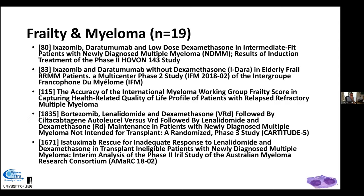There were 19 frailty abstracts at ASH 2021, largely focused on treatment. Highlighted studies include HOVON 143 (ixazomib, daratumumab, dex in intermediate-fit patients), an IFM study using ixazomib and daratumumab in a steroid-free frailty-driven design, real-world data on the IMWG frailty score and health-related quality of life, and Cartitude-5 (VRD followed by ciltacabtagene autoleucel in fitter older patients). An Australian abstract on rituximab rescue from inadequate lenalidomide response in frailer patients was also of interest.